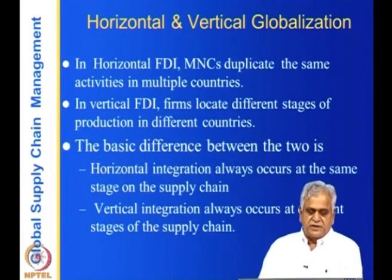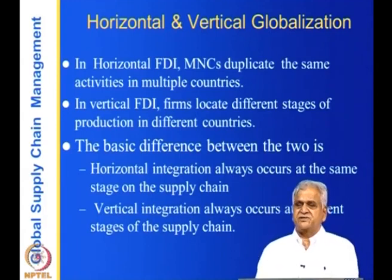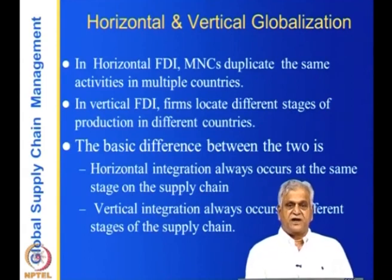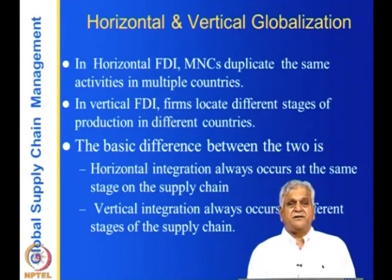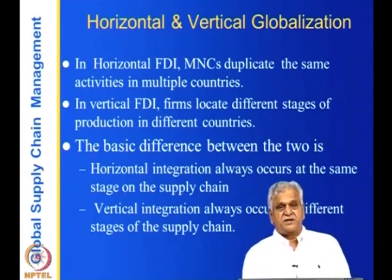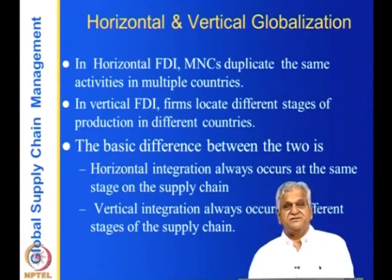The basic difference between the two: horizontal integration always occurs at the same stage in the supply chain — you replicate the same manufacturing process in another country. Vertical integration occurs across different stages of the supply chain — from suppliers making components, to assemblers, to logistics providers moving material between companies. Vertical globalization is what is happening nowadays and it is much more interesting to study in terms of optimization and performance.